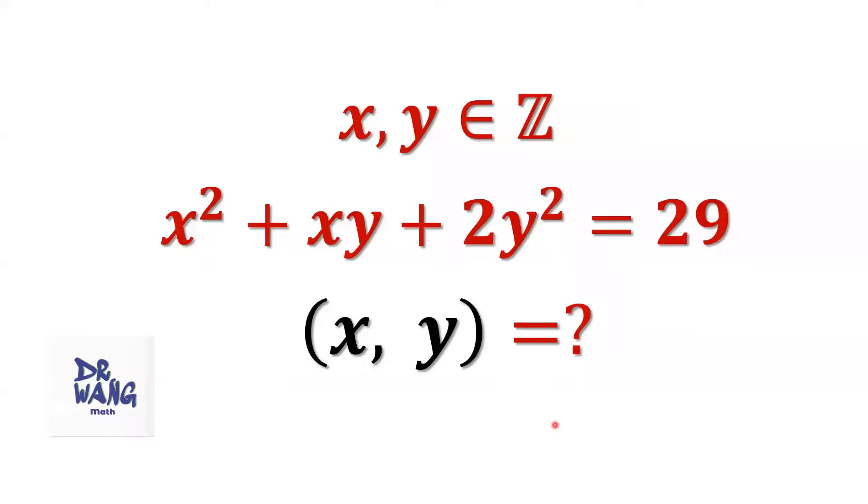Hello, everyone. I'm Dr. Wen. Here is the question. If x and y are integers, we want to solve x² + xy + 2y² = 29 for x and y values.